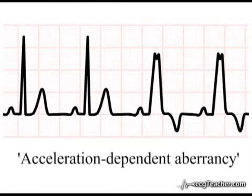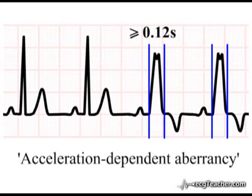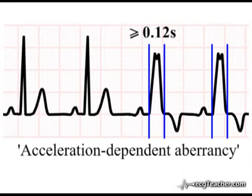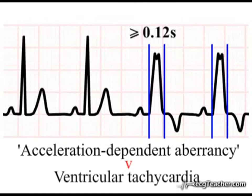In individual patients, acceleration-dependent aberrancy may be triggered on reaching a given heart rate, or may be dependent on the time spent at a higher heart rate. Patients with organic heart disease are subject to arrhythmias, and if a patient prone to this phenomenon develops a tachycardia from a supraventricular focus, failure of a bundle branch at the higher heart rate will result in broad QRS complexes on the ECG. Differentiating such an aberrantly conducted SVT from a ventricular tachycardia is important, as in haemodynamically stable patients the treatment of these arrhythmias differs.